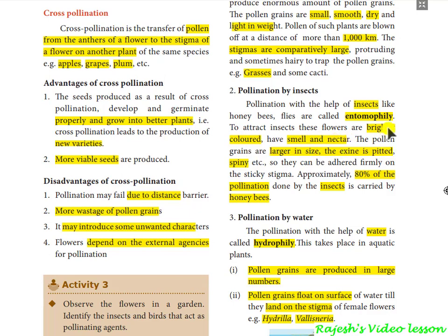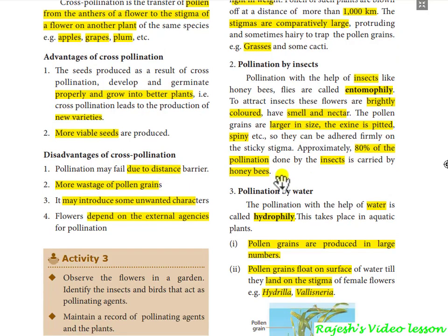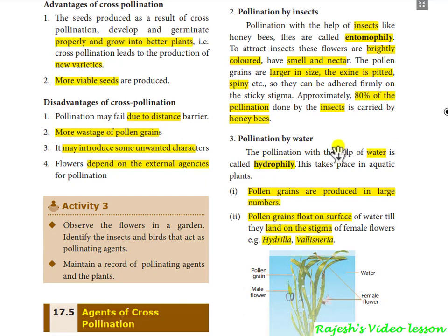Next is pollination by means of insects — entomophily — and it is 100% successful. These flowers have brightly colored petals, good smell, nectar, large size, and spines are present on pollen. About 80% of insect pollination is done by honeybees.